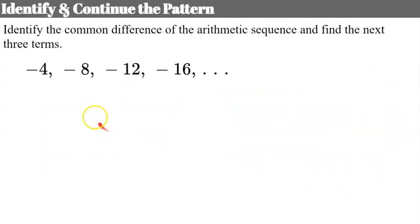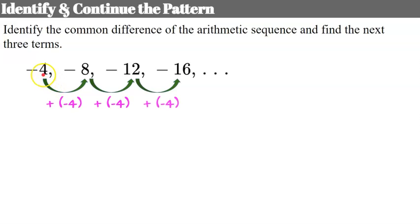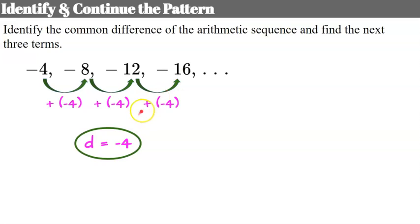Now we'll identify the common difference of an arithmetic sequence and find the next three terms. We go from negative 4 to negative 8 — so what do you add to negative 4 to get negative 8? That same value must apply from negative 8 to negative 12. The answer is negative 4: negative 4 plus negative 4 is negative 8, negative 8 add negative 4 is negative 12, negative 12 add negative 4 is negative 16. Our common difference d is negative 4.